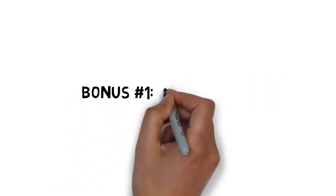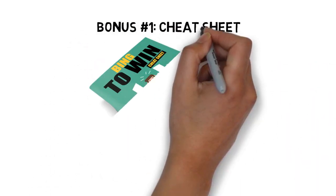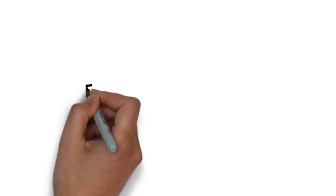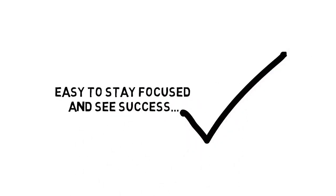Fast action bonus number one is a cheat sheet that breaks down the entire course into some very easy-to-follow step-by-step processes. This cheat sheet makes it easy to stay focused and see success.